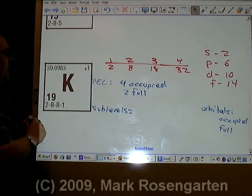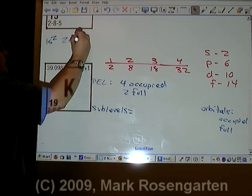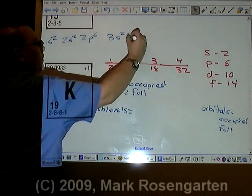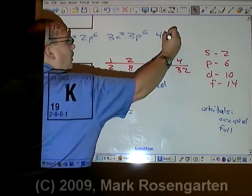The electron configuration for potassium is 1s2, 2s2, 2p6. That takes care of those eight. 3s2, 3p6. That takes care of those eight. And 4s1.